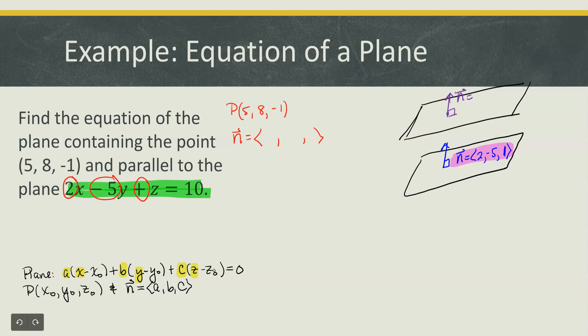So the simplest choice for a normal vector that points in the same direction as the existing plane is just using the normal vector for the existing plane. You could multiply each component by any constant you wish but it's not really necessary. So the normal vector we want to use for our plane is 2, negative 5, and 1.